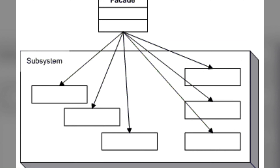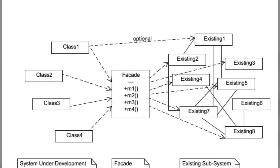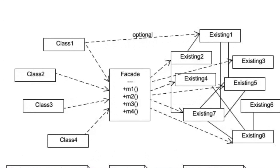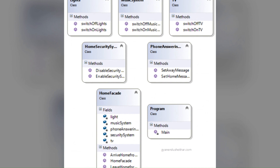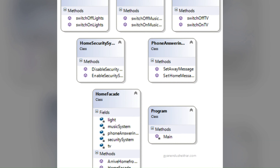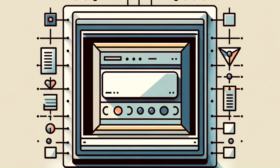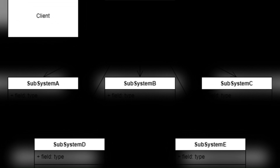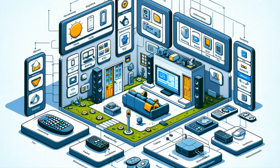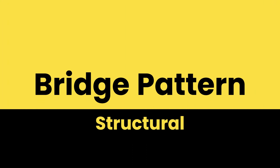In software, a facade can be used for a library or framework, providing a simpler interface to a set of more complex classes or APIs. Use this pattern when you have a complex system that you want to expose to clients in a simplified way, or when there are many dependencies between clients and implementing all the classes becomes too complicated.